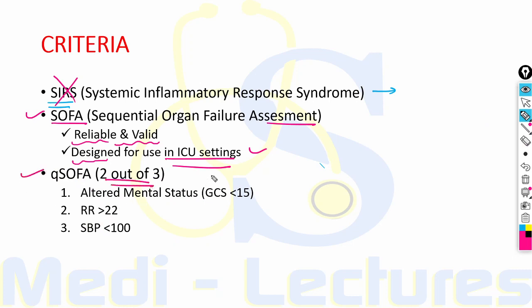In Q SOFA, only clinical grounds are used for diagnosis of suspicion of sepsis: altered mental status with GCS less than 15, tachypnea with respiratory rate more than 22, and hypotension with systolic BP less than 100 mm of mercury. When two out of three of these are positive, it is considered as positive Q SOFA.